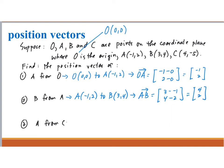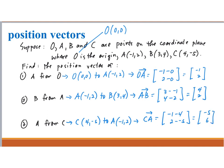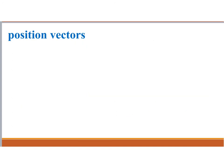The last one is the position vector of A from C. We go from C with coordinates (4, -5) to A with coordinates (-1, 2). The vector we are looking for is CA. The X component is -1 minus 4, and the Y component is 2 minus (-5), which gives (-5, positive 7).